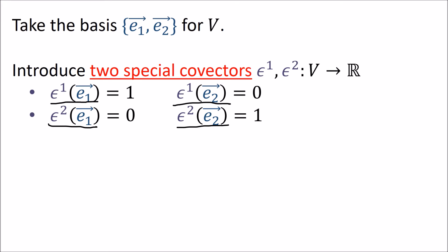If that's confusing, all this really says is that if the top number matches the bottom number we get 1, and if the numbers are different then we get 0. To sum all this up we can write εⁱ(eⱼ) equals the Kronecker delta δᵢⱼ. Remember that the Kronecker delta says if i equals j we get 1, and if not we get 0. This is how we define the epsilons.